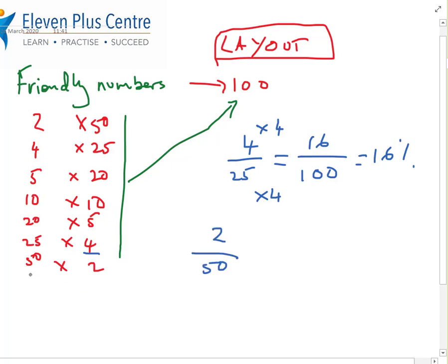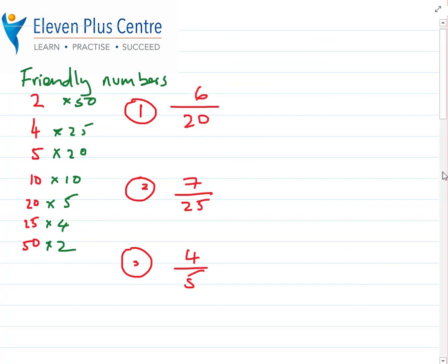Let's do 2 out of 50. Is 50 a friendly number? Yes it is. We lay out like this. What number turns 50 into 100? Times 2, because 50 times 2 is 100. Whatever we do to the bottom we do the same to the top: 2 times 2 is 4. So the answer is 4 percent. So 2 out of 50 as a percentage is 4 percent.